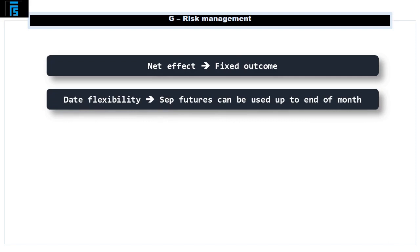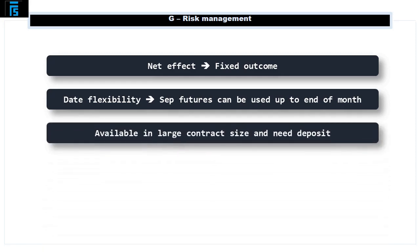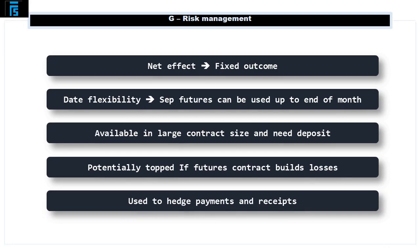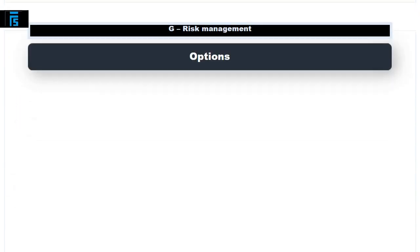Futures give some date flexibility — for example, September futures can be used at any time up to the end of September, so if a customer pays a little late this can usually be accommodated. However, futures are only available in large standard contract sizes, and a deposit needs to be made and potentially topped up if the futures contract is building up losses in the run-up to the customer paying. Futures can be used equally to hedge payments as well as receipts.